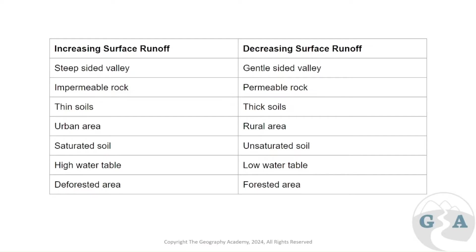The first factor is steep-sided valleys. If it's a steep-sided valley, a lot of water can flow down very rapidly without giving it the chance to really infiltrate. A gentler-sided valley or a flat area is going to allow time for some water to infiltrate — the water can sit and wait patiently to infiltrate into the soil, so there'll be less runoff.